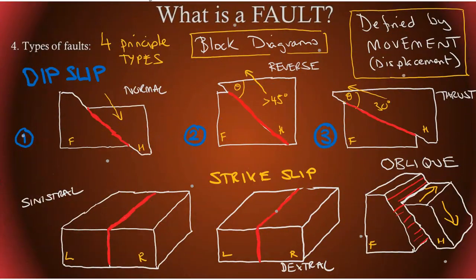So these are our four main types. We have three types of dip slip. Normal is where the hanging wall is going down, which is diagram one, the block diagrams. Diagram two and three, they're both reversed, but depends on the angle. If it's a 45 degree angle, it's reversed as shown here. If it's a lower angle around 30 degrees, it's called a thrust.